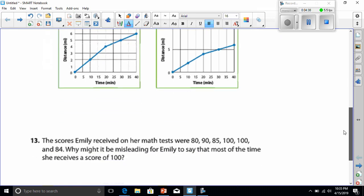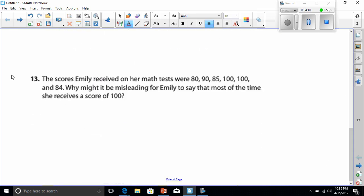Twelve is yours to do. I'm going to go ahead and run down number thirteen now. The scores Emily received on her math tests were 80, 90, 85, 100, 100, and 84. Why might it be misleading for Emily to say that most of the time she receives a score of 100? Well, we go by three different things here.